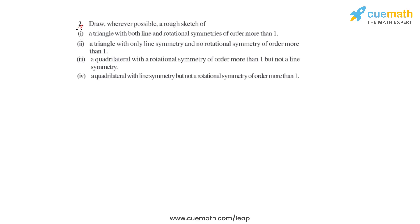In question number 2 of this third exercise, we will have to draw some rough sketches for a few questions. The first is about a triangle with both line and rotational symmetries of order more than one. The second is a triangle with only line symmetry and no rotational symmetry of order more than one. The third concerns a quadrilateral with rotational symmetry of order more than one but no line symmetry. The fourth is a quadrilateral with line symmetry but not a rotational symmetry of order more than one. Let us take these questions one by one.